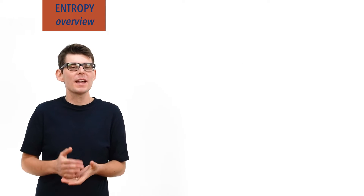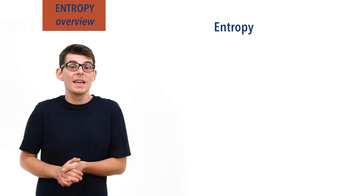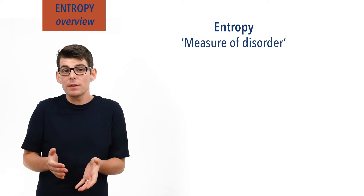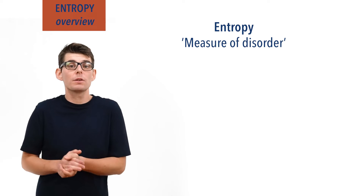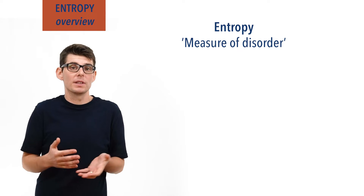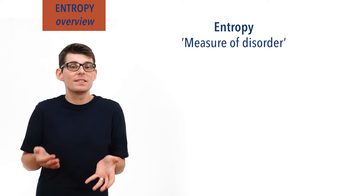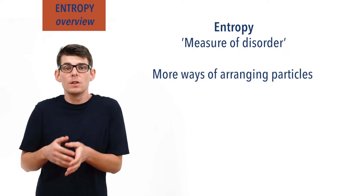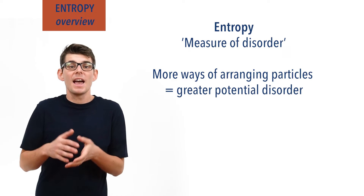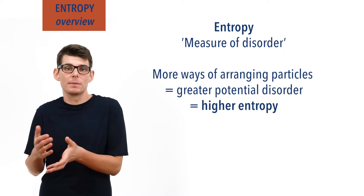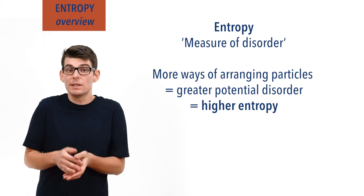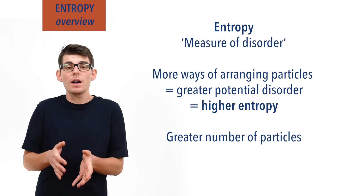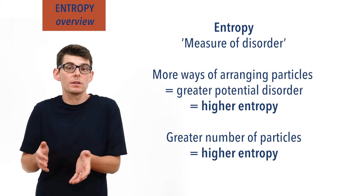Part one: what your textbook probably says. Entropy is described as being a measure of disorder. The entropy of the universe will always tend to increase whenever a reaction or process occurs. What this is really telling us is that the more ways you can arrange particles in a system, the greater its potential disorder and the higher the entropy. Obviously the more particles you have in a system, the greater the number of ways you can arrange them, meaning a higher entropy.